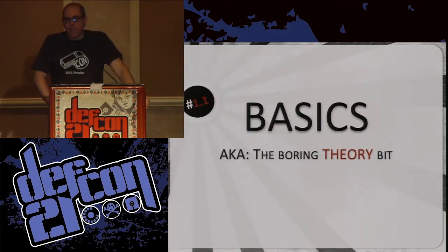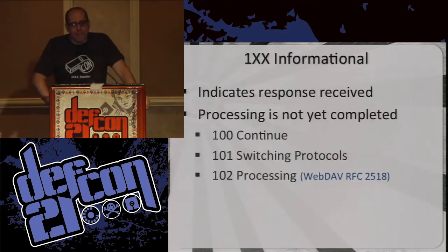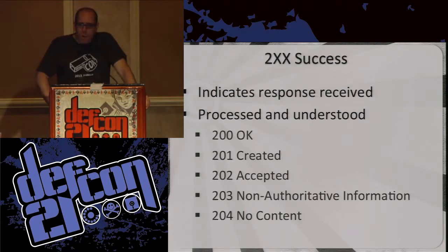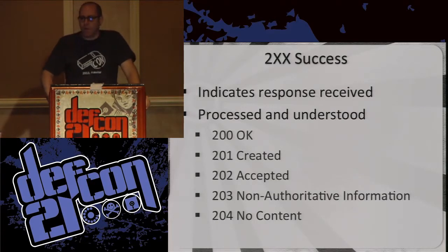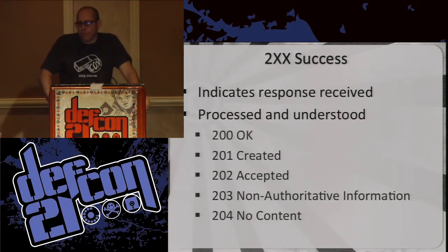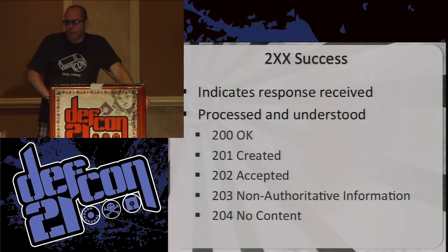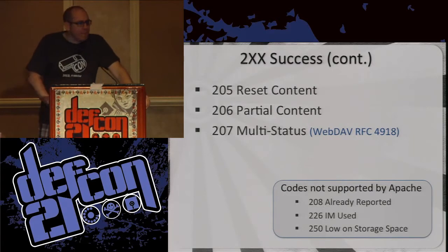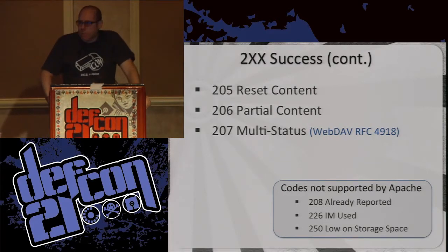So let's go through the basic stuff — this is the theory. You get the 100 informationals: 100 continue, switch protocols, processing — these are things you don't see very much. Moving into the 200 stuff, it means it worked, it was understood. You get 200 OK, which is most of the web. You also get weird stuff like 204 no content. There's also some interesting stuff not supported by Apache, like low on storage space — I've never seen that returned by a server but I'd really like to.